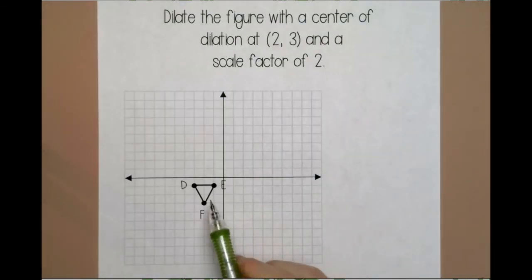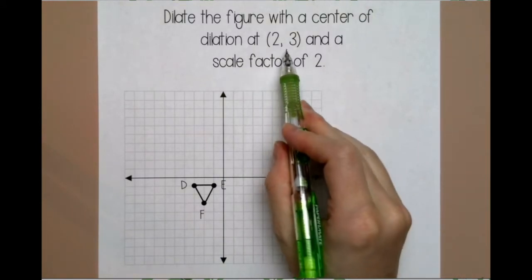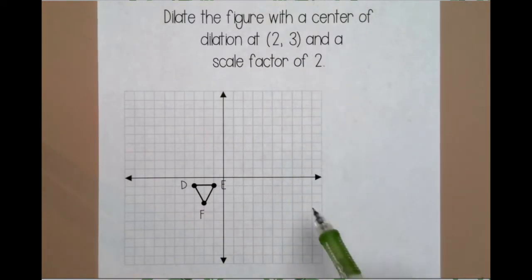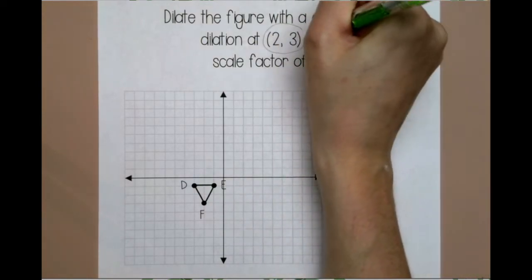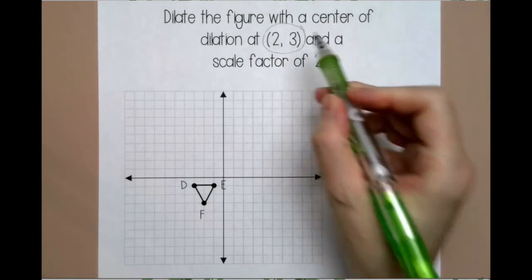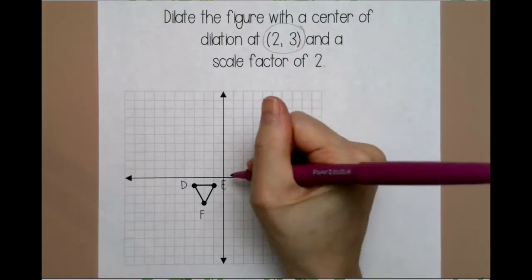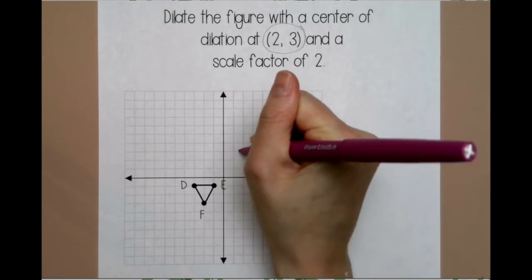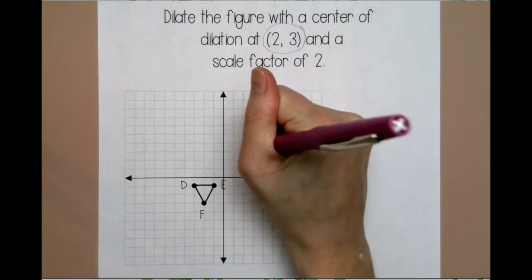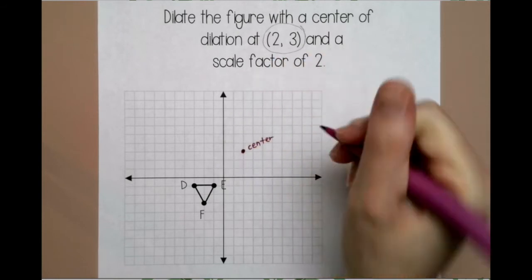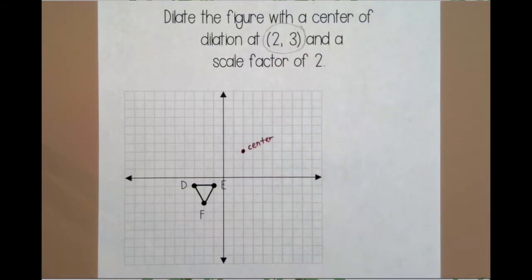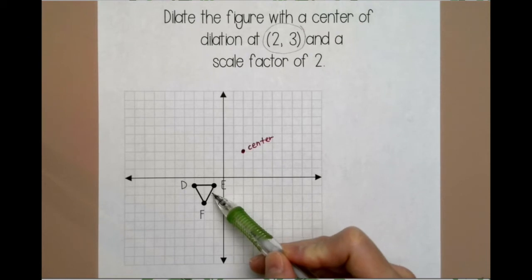In this example, I want to dilate the triangle with a center of dilation at (2, 3) and a scale factor of 2. So this example is different because the center of dilation is not (0, 0). So the first thing you want to do is plot the center of dilation, and I like to use a color. That way I know that's the center of dilation throughout the entire problem. And I even write center beside it to remind myself. So when the center of dilation is not (0, 0), you're not worried about the coordinates. You're worried about the distance from the center. So you want to count from the center to each point.